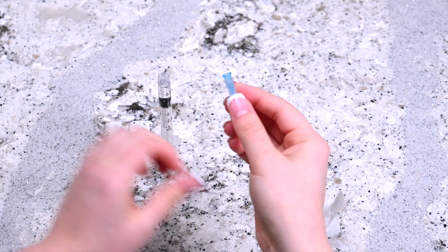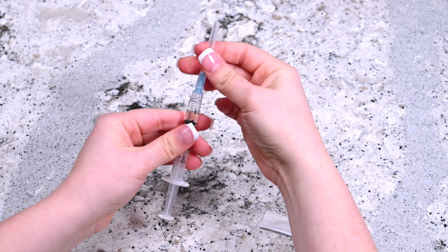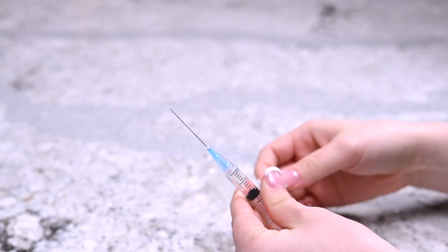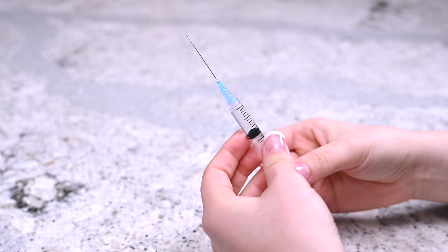Remove the needle from its packaging. Twist it into place on the top of the syringe. Hold the needle upright and remove the cap. Don't let the needle touch anything, including your hands.